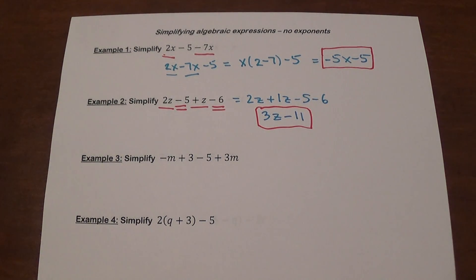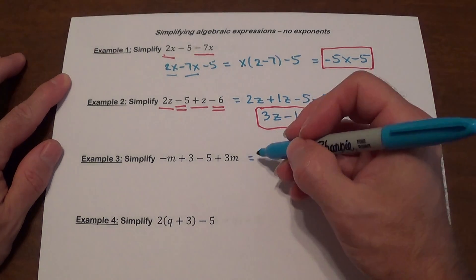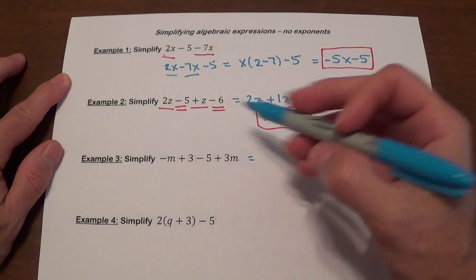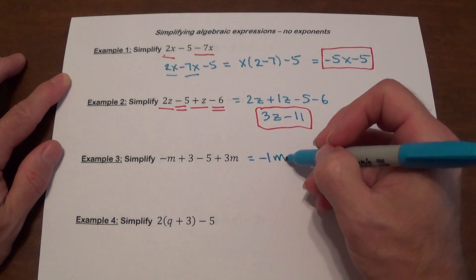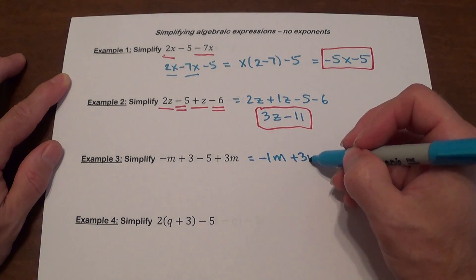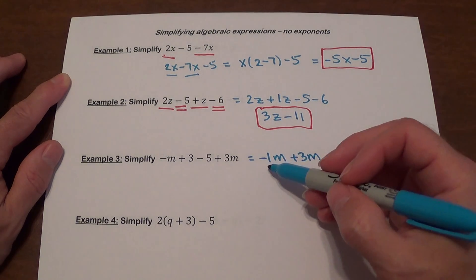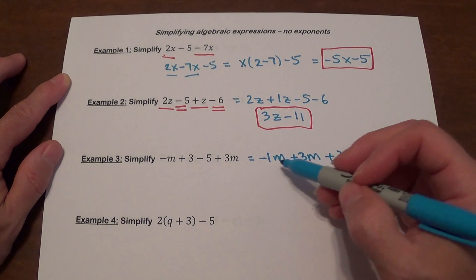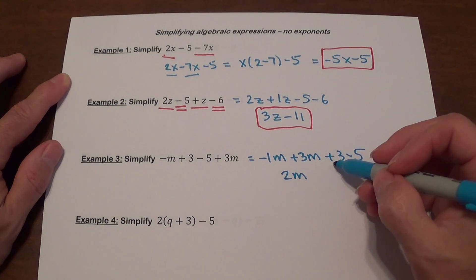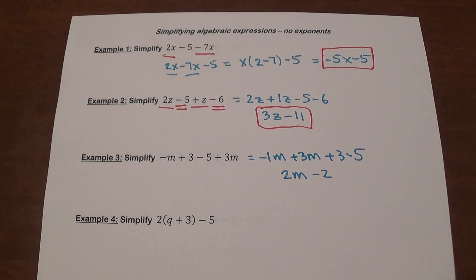Next problem: negative m plus 3 minus 5 plus 3m. Note that negative m means negative 1m. We rewrite it putting 3m next to it: negative 1m plus 3m, then plus 3 minus 5. Negative 1m plus 3m gives 2m. 3 minus 5 gives minus 2. This is our answer.